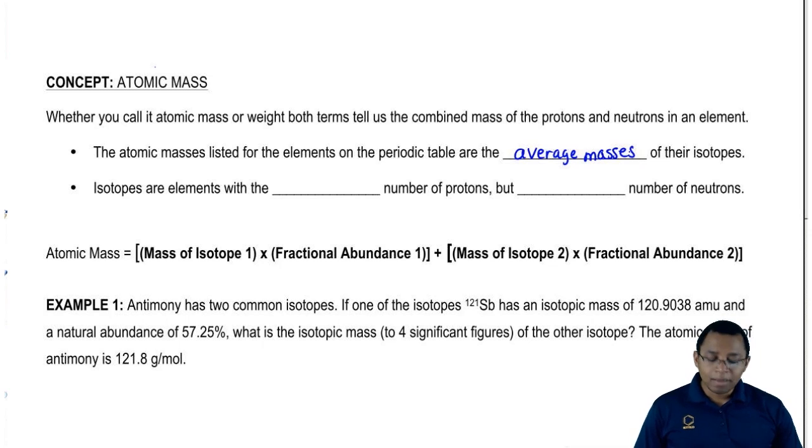We're going to say that isotopes are elements with the same number of protons but different number of neutrons.